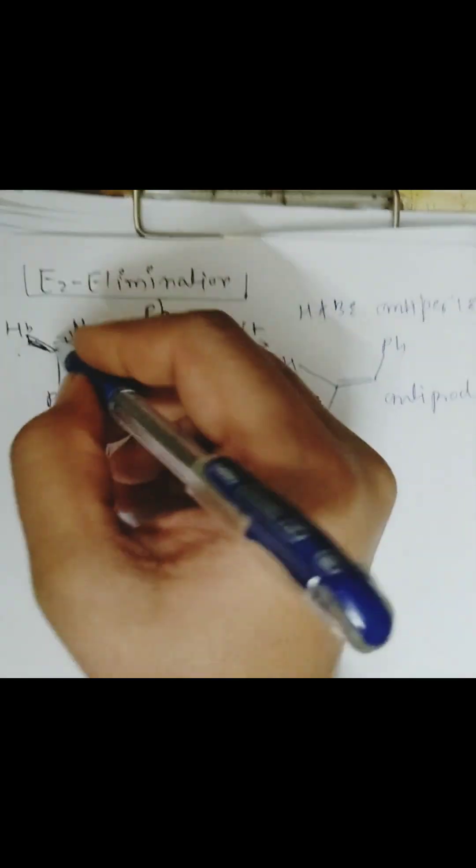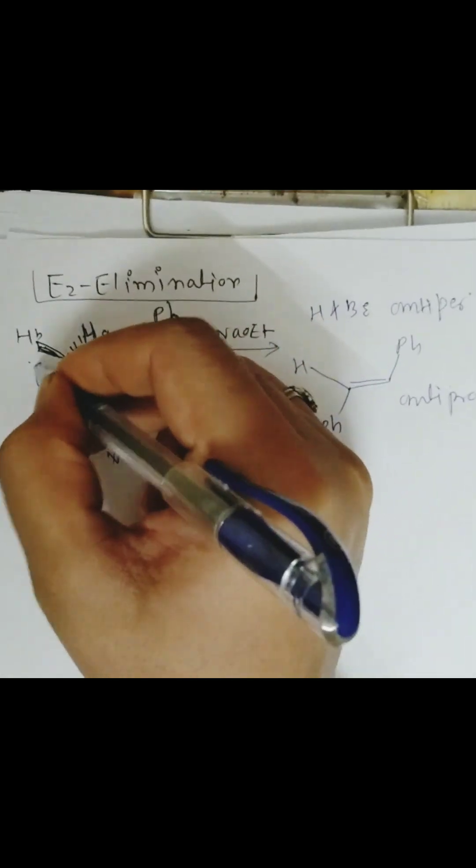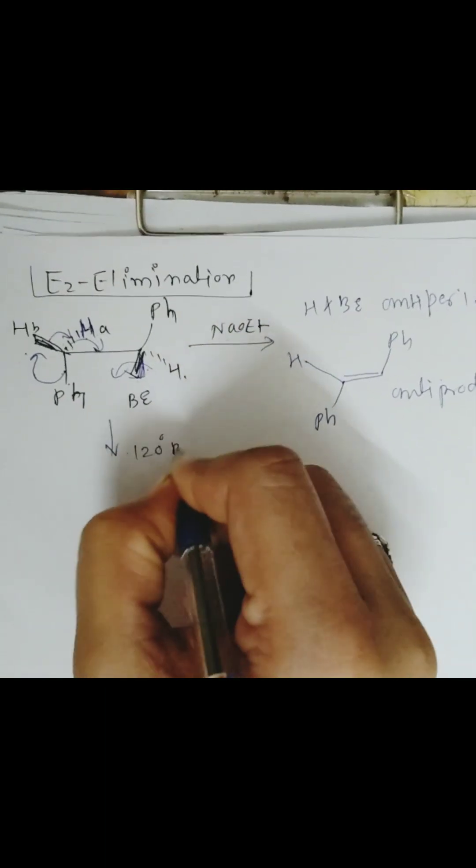In the second case, we have to rotate by 120 degrees. Ha will go above, this Hb hydrogen will go below, and Hb will be in the plane by 120 degree rotation.